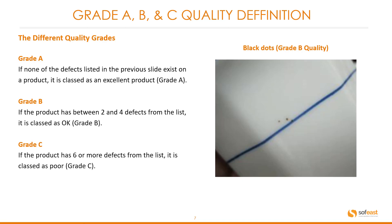Grade B can be defined as: if the product has between two and four defects from the list, it is classed as OK or grade B. Grade C, on the other hand, is if the product has six or more defects from the list, it is classed as a poor quality product or grade C.